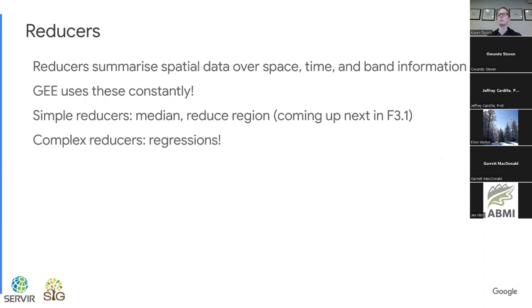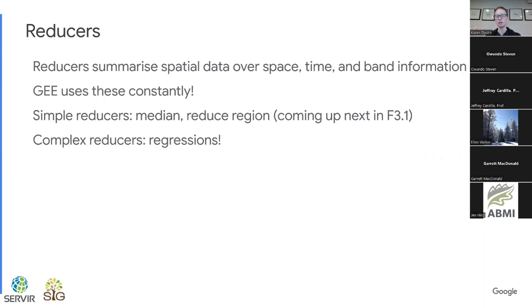Reducers: I will talk very briefly about them here because we will use them, but we will talk about them in more depth in future chapters. Reducers generally summarize spatial data over space, time, and band information. Thinking about and exploring the properties of different image collections that we did over the past number of weeks — reducers kind of sum that into one number or one band, depending on the reducer. Google Earth Engine uses these with great frequency. Simple reducers include things like taking the median or reducing a region — this is how you do a lot of the focal statistics and zonal statistics. There are also complex reducers, and that's where regressions come in.